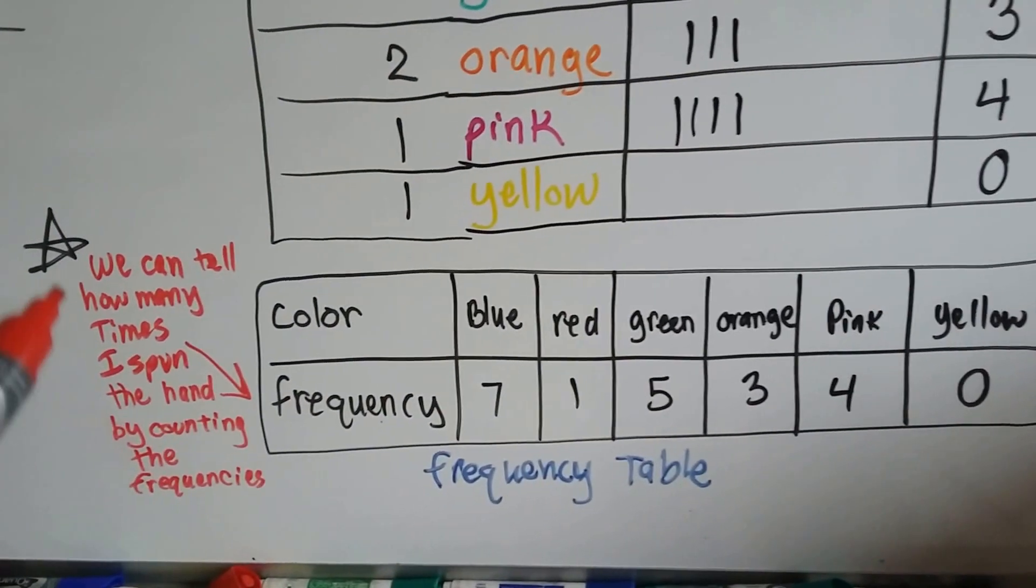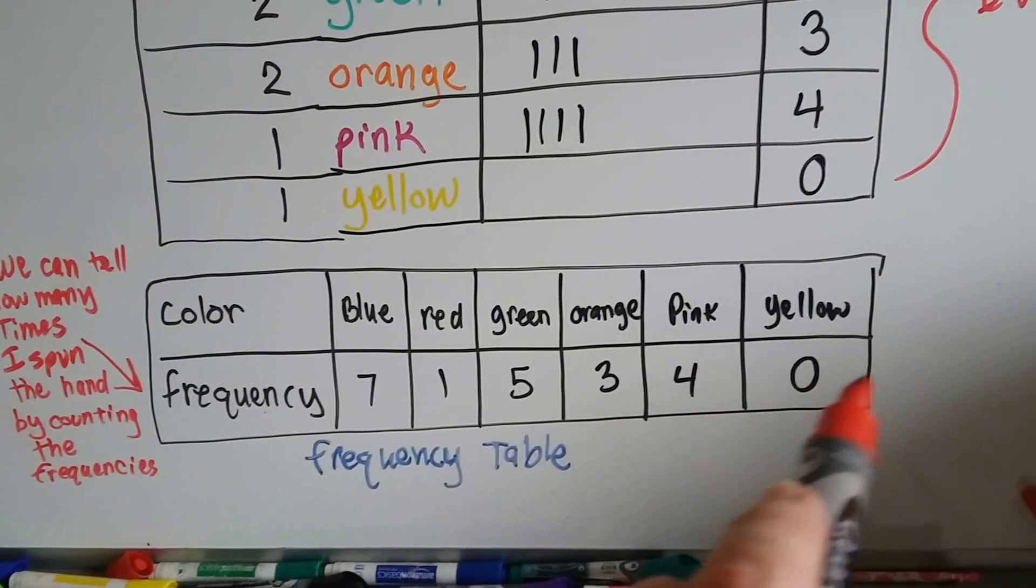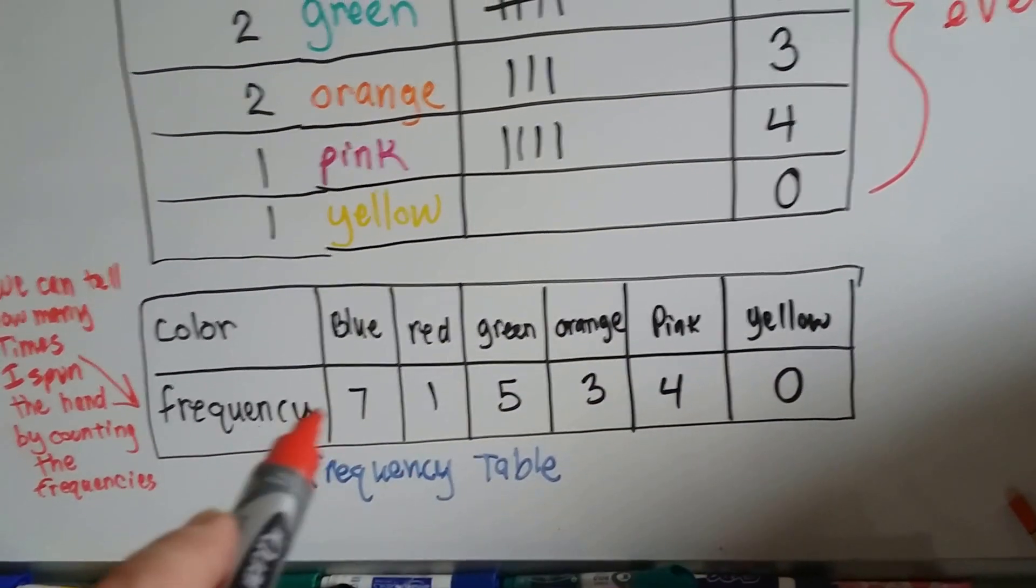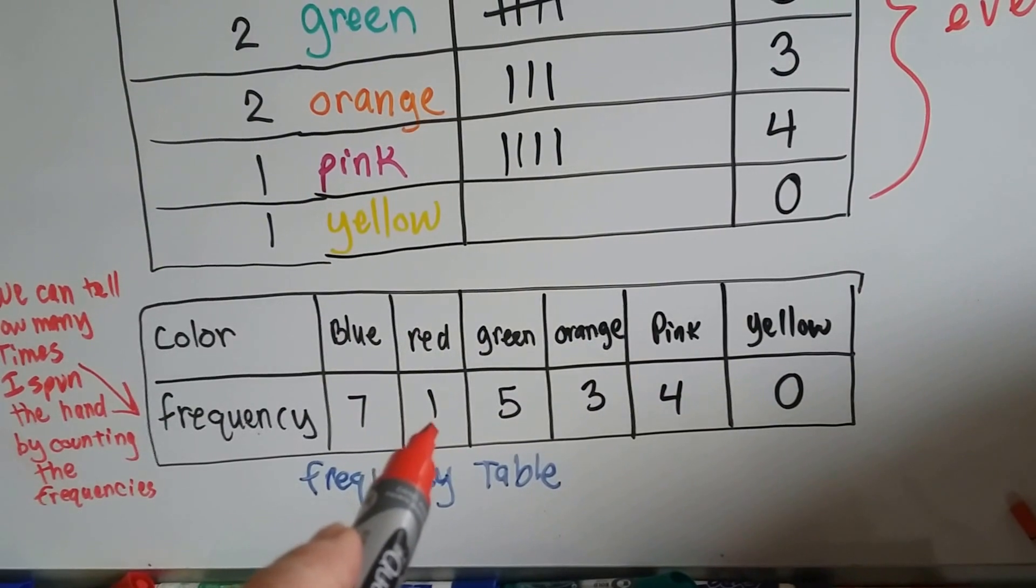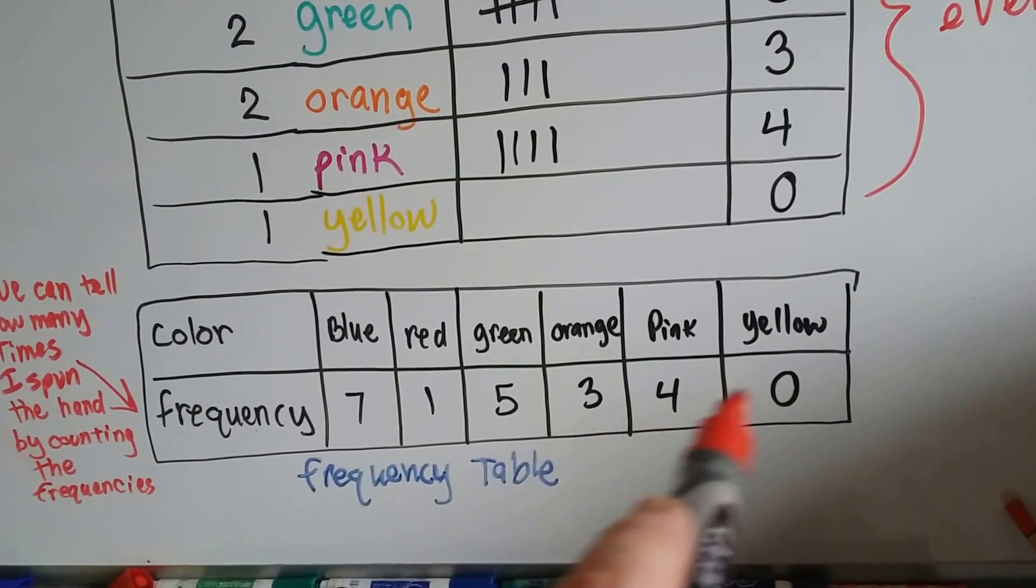You can tell how many times I spun the hand around by counting the frequencies. You count all these up, it's going to equal 20. Seven and one is eight, plus five is 13, plus three is 16, plus four is 20.